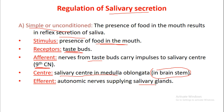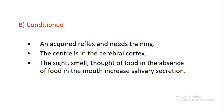The efferent pathway uses the autonomic nervous system — both sympathetic and parasympathetic — supplying the salivary gland. The conditioned reflex is an acquired reflex that requires training; its center is in the cerebral cortex. It is activated by the sight, smell, or thought of food even in the absence of food in the mouth, which increases salivary secretion.